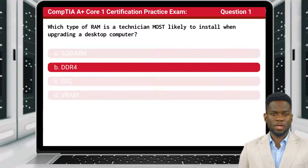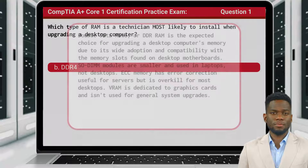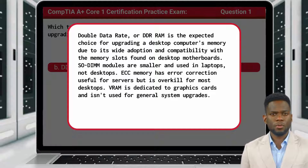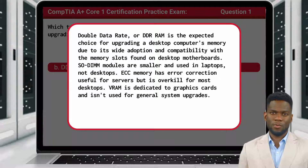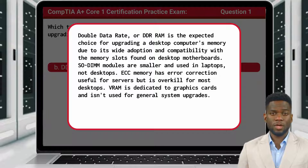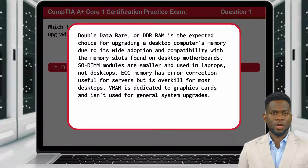The answer is B, DDR4. Double Data Rate, or DDR RAM, is the expected choice for upgrading a desktop computer's memory due to its wide adoption and compatibility with the memory slots found on desktop motherboards. SO-DIMM modules are smaller and used in laptops, not desktops. ECC memory has error correction useful for servers but is overkill for most desktops. VRAM is dedicated to graphics cards and isn't used for general system upgrades.